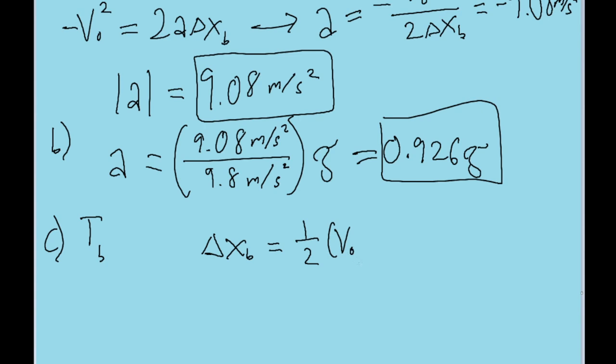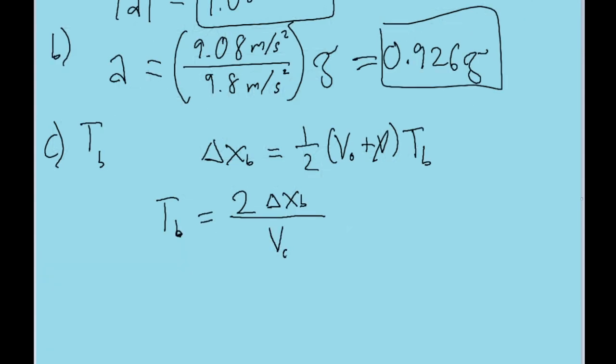times the sum of the two velocities, V naught plus V, times T, times the time T sub B. So I'm going to now solve this equation to solve for T sub B. And of course the final speed is still 0, so this term can be ignored. And you find an equation saying that T sub of B is equal to 2 times the distance delta X sub B, and then we divide by the initial speed.